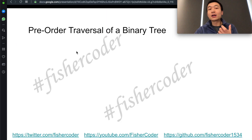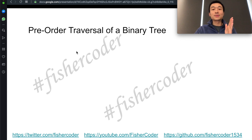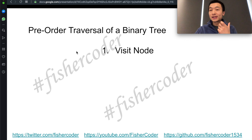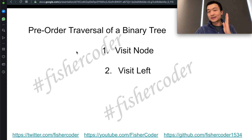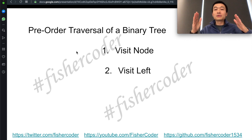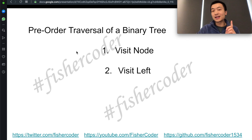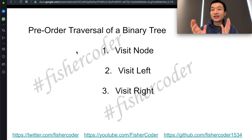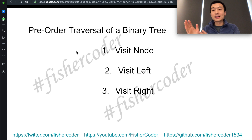The pre-order traversal of a binary tree follows three steps. Number one is that we visit the given node itself. Then, for a binary tree, we always have two sides — left and right. So we visit the left side second, and the third step is that we visit the right side of the tree.